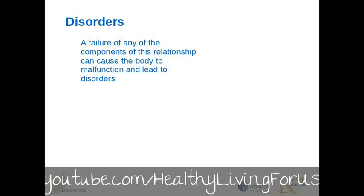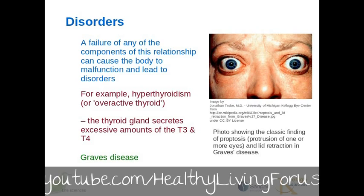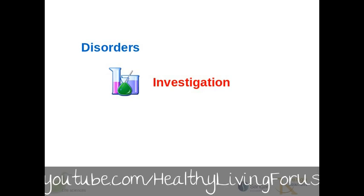Let's look at disorders. A failure of any of the components of this relationship can cause the body to malfunction and lead to disorders. For example, hyperthyroidism, or overactive thyroid, happens when the thyroid gland produces and secretes excessive amounts of free thyroid hormones, T3 and T4. One example of hyperthyroidism is Graves' disease. Patients suffer from a number of physical and psychological symptoms, and sometimes they are quite severe. One visible manifestation often seen with Graves' disease is the classic protrusion of the eyes, or proptosis. As you are going to be doing an investigation to research disorders caused by under and over secretion of at least one hormone, with different learners researching different hormones, we won't cover any more disorders here.